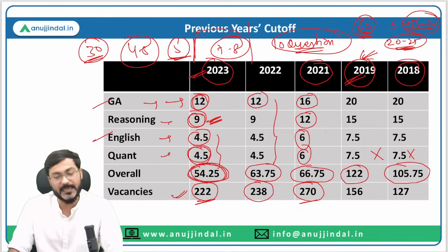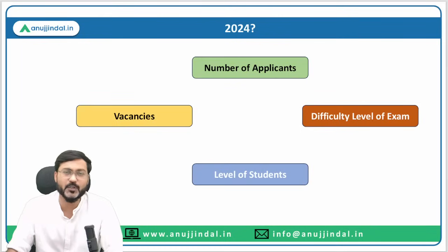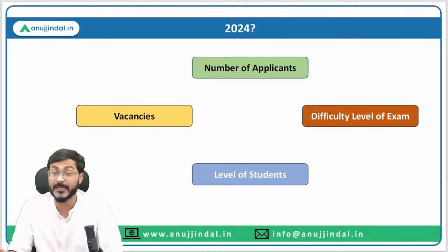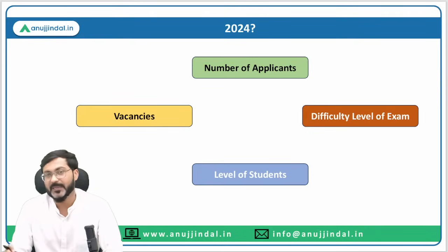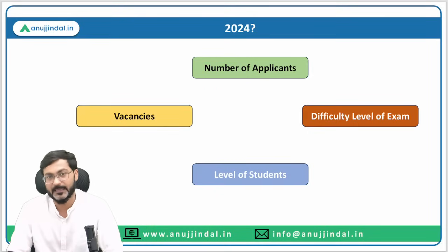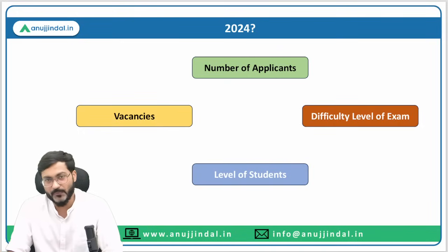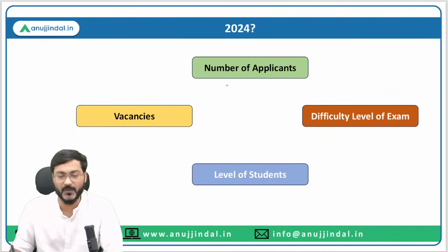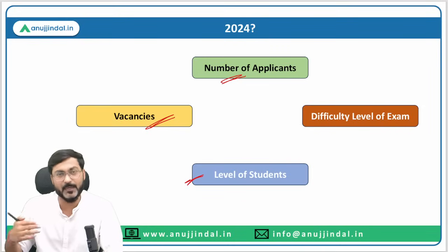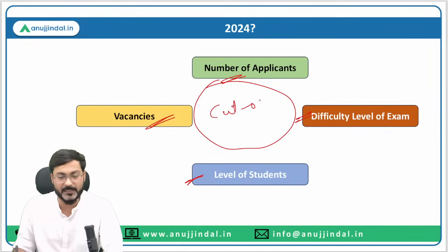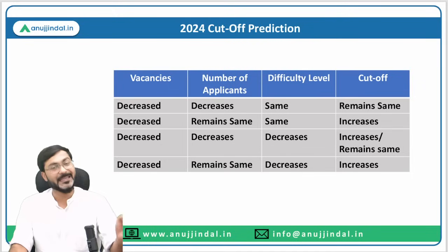Now let's talk about 2024. People keep asking again and again: since vacancies have decreased, what will be the impact on the cutoff? See, the cutoff does not depend only on the number of seats. There are a number of factors which can impact the cutoff: number of applicants, vacancies, level of students, and the difficulty level of the examination — these are the four key factors.